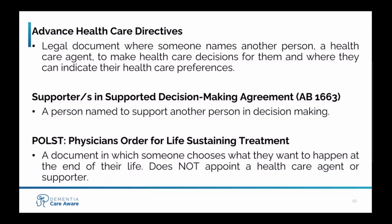Additionally, if someone is able to name a backup agent, that's really important. Oftentimes a person will name a spouse or partner and never revisit their planning documents, and at the point when the document takes effect, that partner or spouse might not be available. If someone cannot name more than one person or even any person, they should still complete the document. The second part of an advanced health care directive contains instructions on the patient's desires for types of care or interventions they do or do not want — sometimes called a living will. It's important to distinguish a power of attorney for health care from a durable power of attorney for finances. An advanced health care directive needs to be witnessed by two people or notarized to be legally valid.